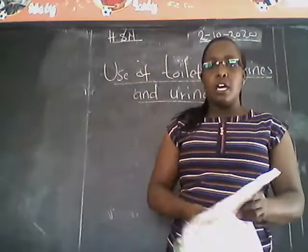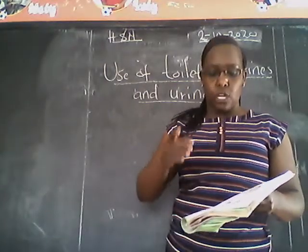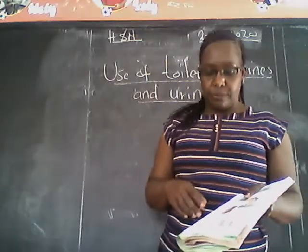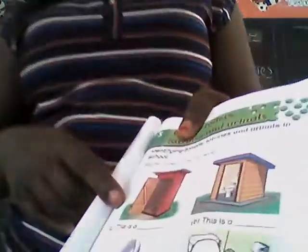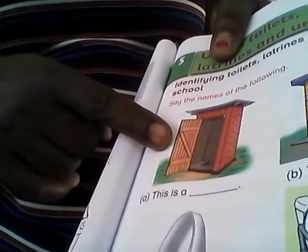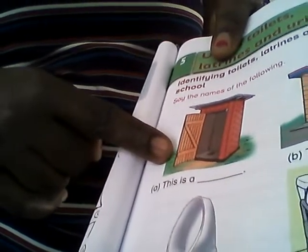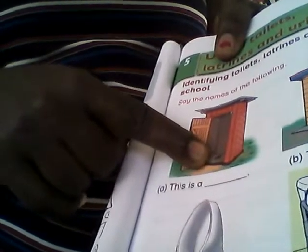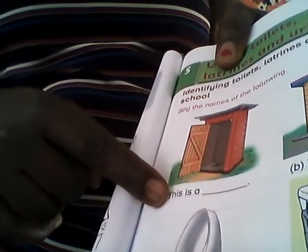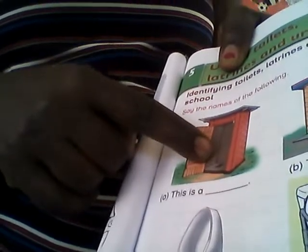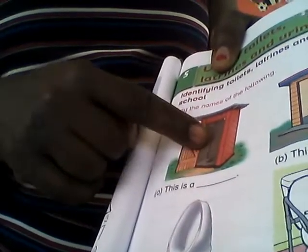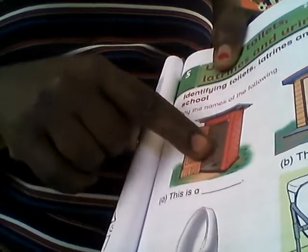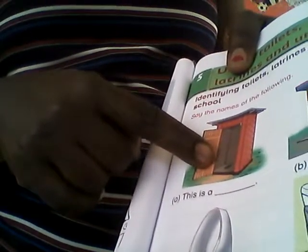So I want to show you pictures so that you can differentiate between a toilet, a latrine, and a urinal. Like here — this one here is a latrine. You can see it is having a hole. This is a pit latrine. Most of the pit latrines are found in rural areas.